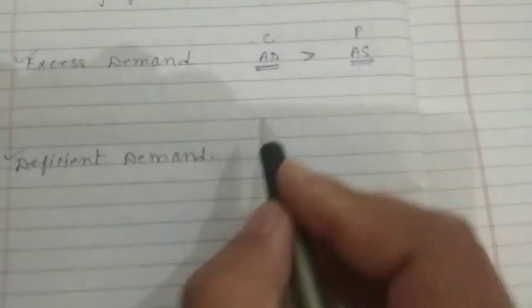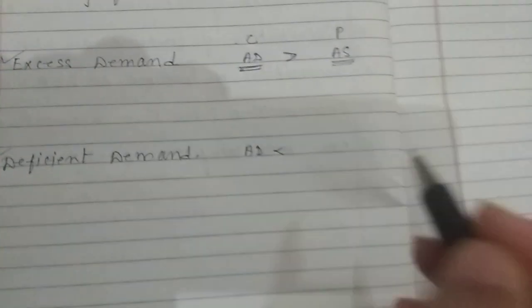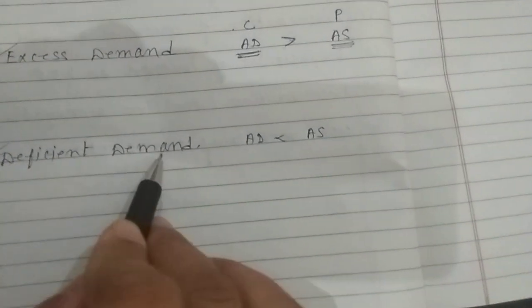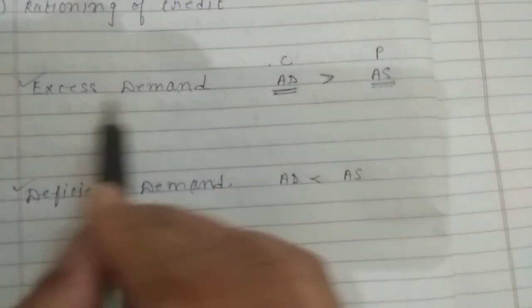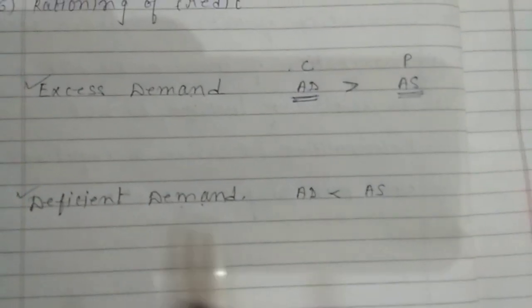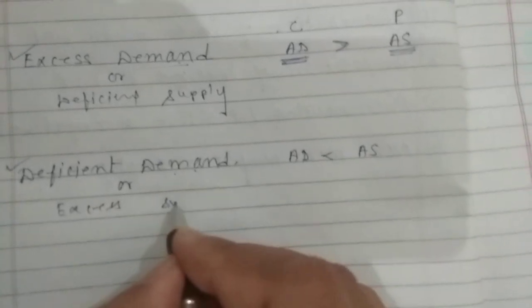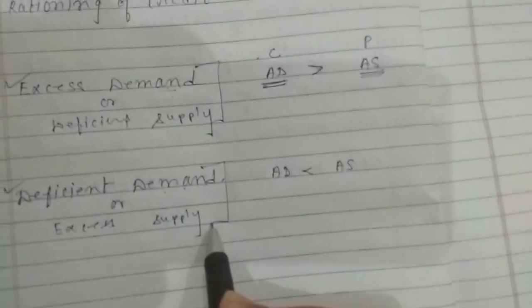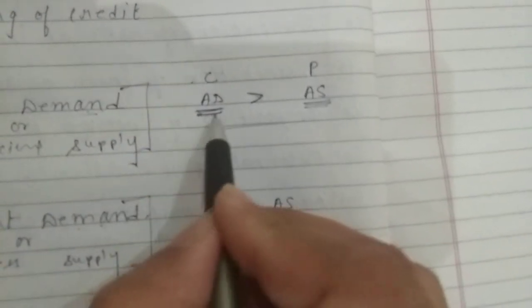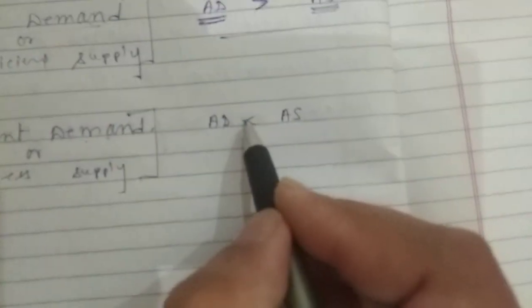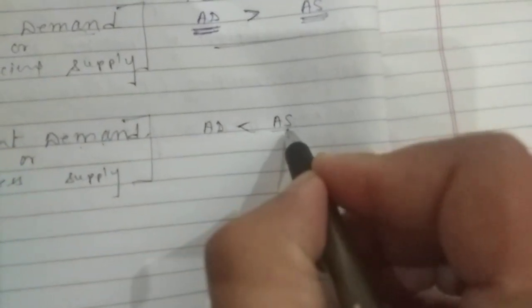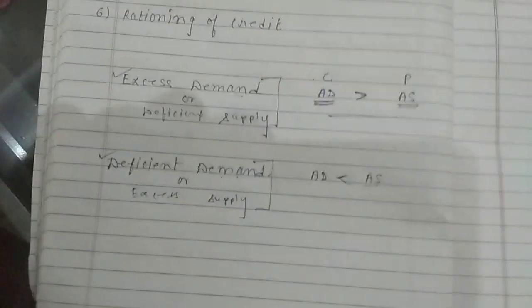On the other side, the opposite happens — sometimes the level of aggregate demand in the market is low, people are not buying as much as producers are making, so we can also call that situation deficit demand. Now what we are calling excess demand, we can also call it deficit supply. And what we are calling deficit demand, we can also call it excess supply. The situation of excess demand is also known as deficient supply, and the situation of deficit demand is also called excess supply. Corresponding to the full employment level, when the level of aggregate demand is more than aggregate supply it is called excess demand; when the level of aggregate demand is lower than aggregate supply corresponding to full employment level, that is known as deficient demand.